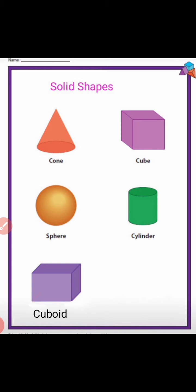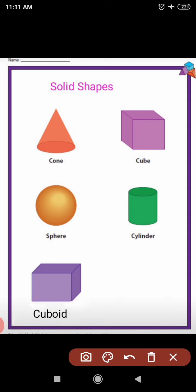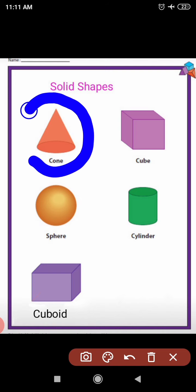Now tell me what is the first solid shape. Tell me the name of these solid shapes. Yes, this is a cone. Speak with me the spelling of cone: C-O-N-E, cone. C-O-N-E, cone.